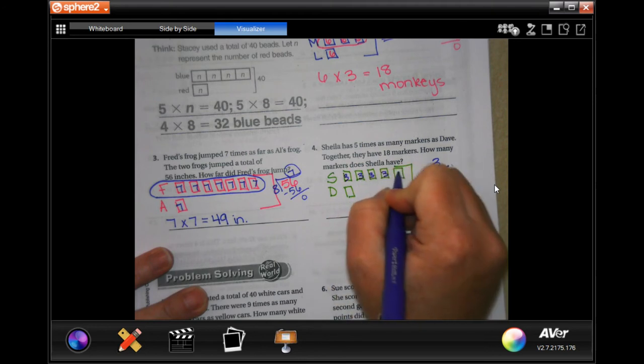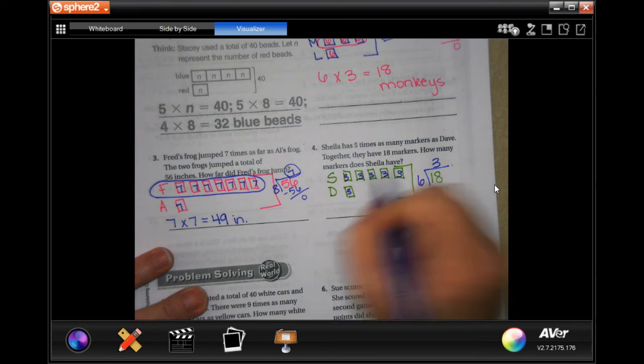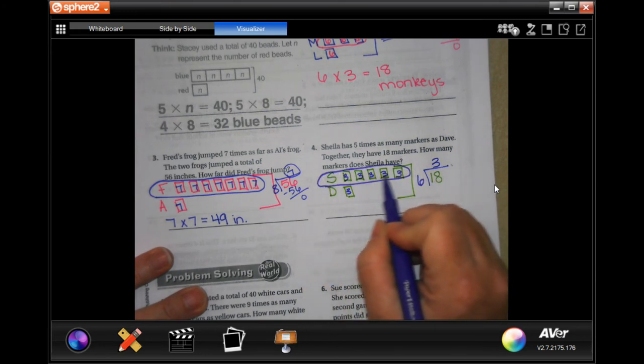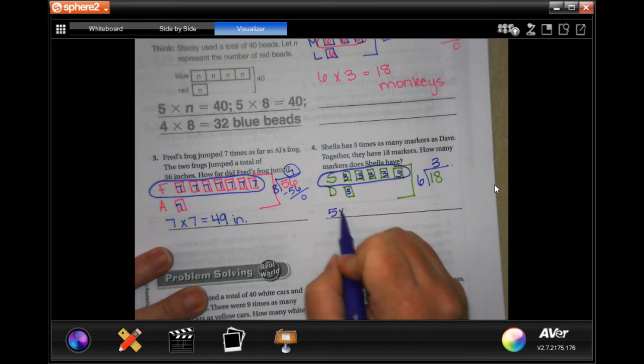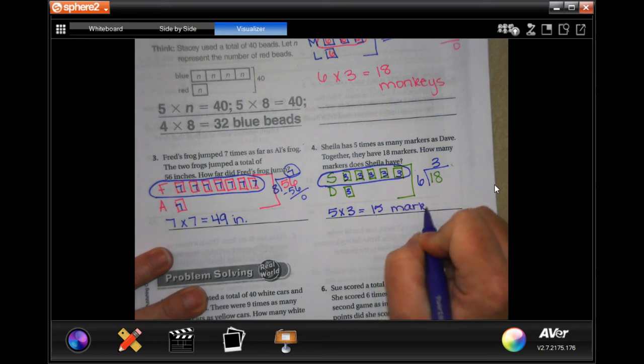That means that each one of the boxes is worth three. How many markers does Sheila have? Well Sheila has one, two, three, four, five and each one of those is worth three. She has 15 markers.